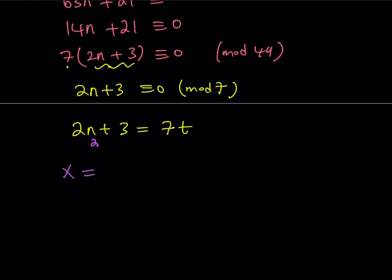If n is equal to 2, then x is going to equal 4 + 2 times 7, which is 18. And this means that x ≡ 18 (mod 49).